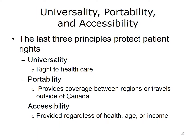The last three principles explain the rights of patients within the health care plan. The universality principle states that all Canadian residents should receive the same level of care within their province or territory. The portability principle states that residents must receive health care coverage if they travel outside of Canada or if they move from one province or territory to another. This principle also ensures coverage during the brief waiting period to join a health plan when residents move between provinces and territories. The accessibility principle states that every resident must have access to health care regardless of their health, age, or income. Health care providers must also be adequately paid for their services.